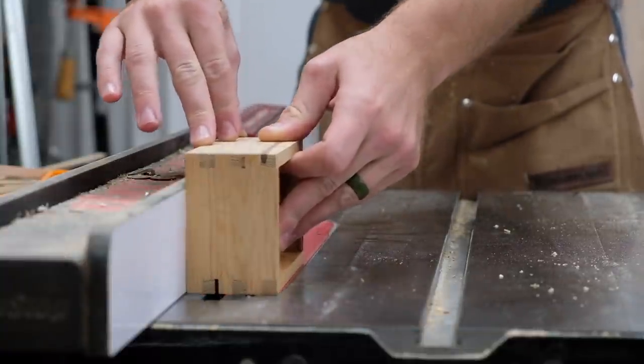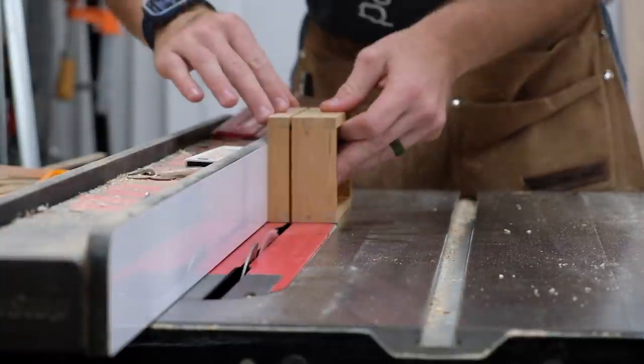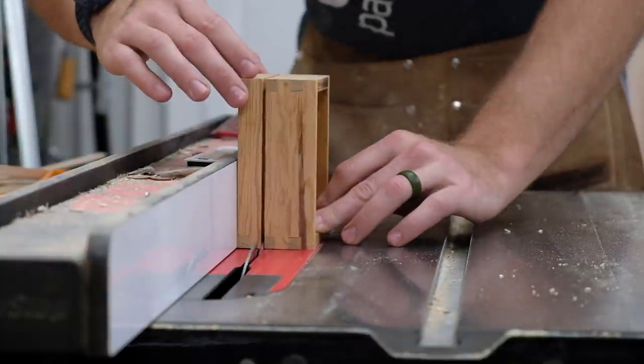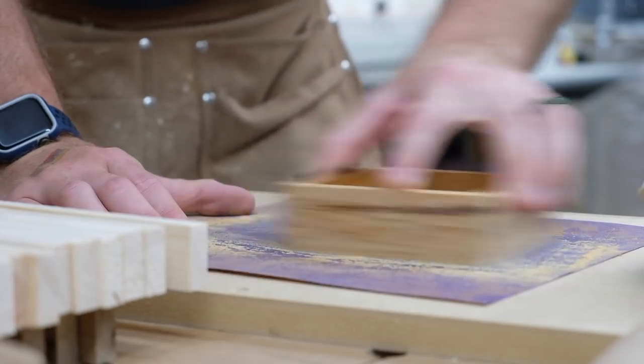The next step was to cut the lid from the base using the table saw. I always get some deviation from a perfect cut here, so sanding or planing is always required. In this case, I put some sandpaper down on MDF to sand the edges flat.